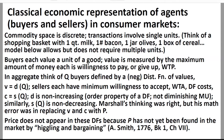Demand here is non-increasing — this is a distribution function; it has nothing to do with diminishing marginal utility, it's just the property of a distribution function. Similarly, sellers are bringing a distribution of costs, which is non-decreasing. Marshall's thinking was right, but his math error was in replacing V and C with price, because what buyers bring to market is this maximum willingness to pay, and sellers bring a minimum willingness to accept — a cost. Prices do not appear in these distribution functions because price has not yet been found in the market by higgling and bargaining. That's the point of Chapter 7 of the Wealth of Nations.